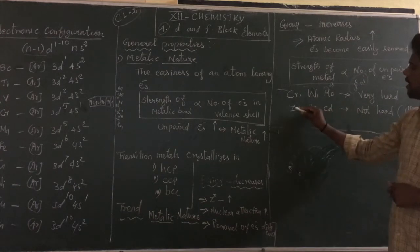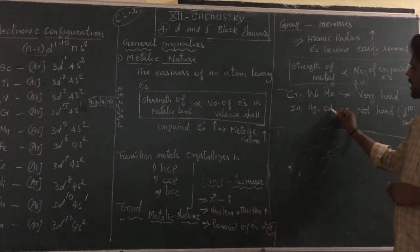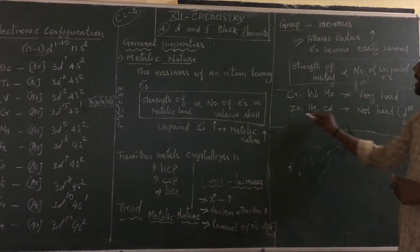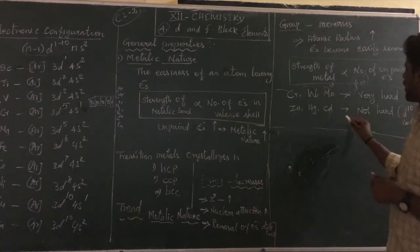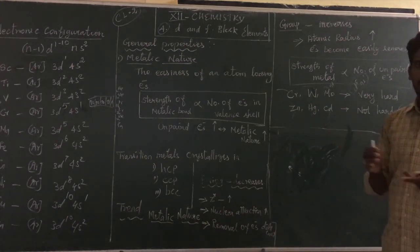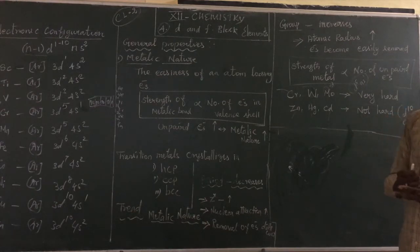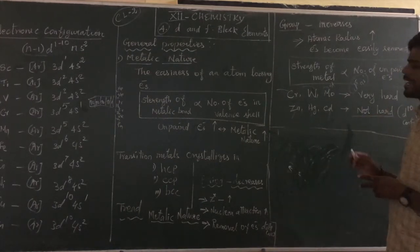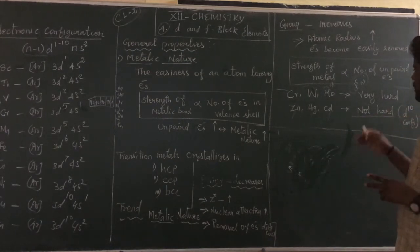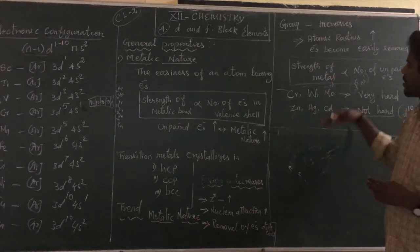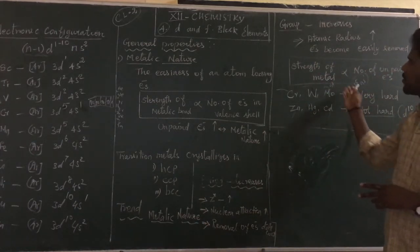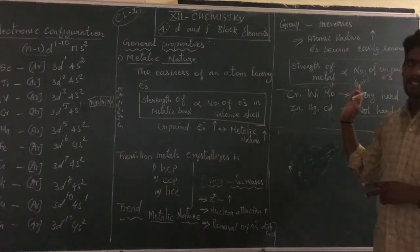On the other hand, zinc, cadmium, and mercury — from the 3d, 4d, and 5d series respectively — have completely filled d-orbital configurations. Due to this completely filled configuration, they behave as soft metals. This concludes the discussion on metallic nature.